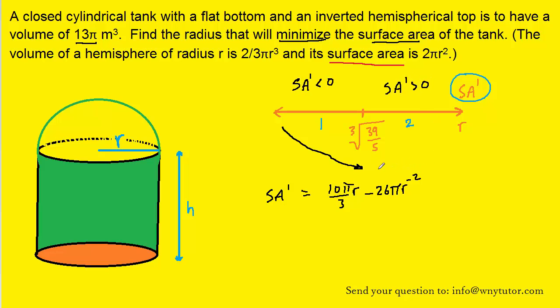A positive first derivative indicates that the surface area function is increasing in that interval. So we can see from this picture that right in the middle of this number line, right at the cubed root of 39/5, we indeed get a minimum surface area. So the correct answer for the radius does in fact turn out to be the cubed root of 39/5.